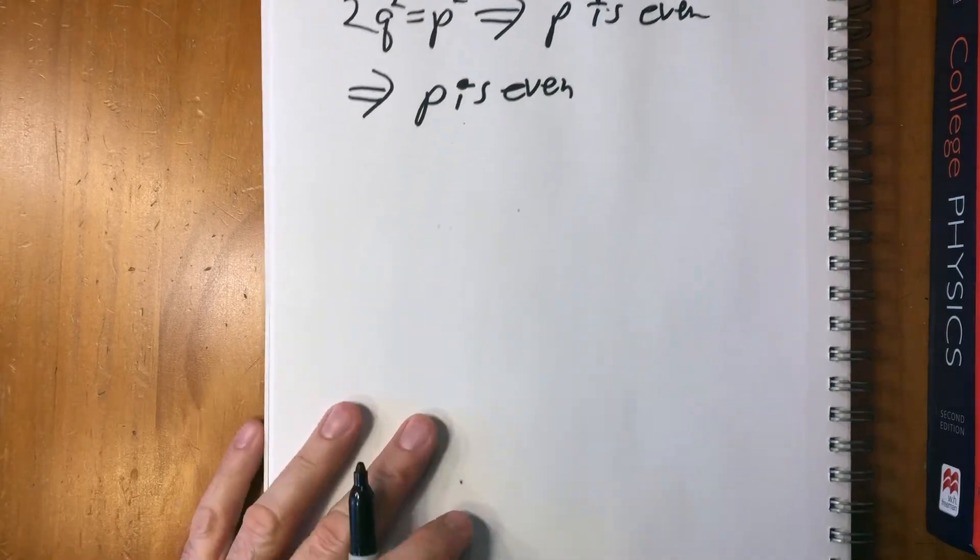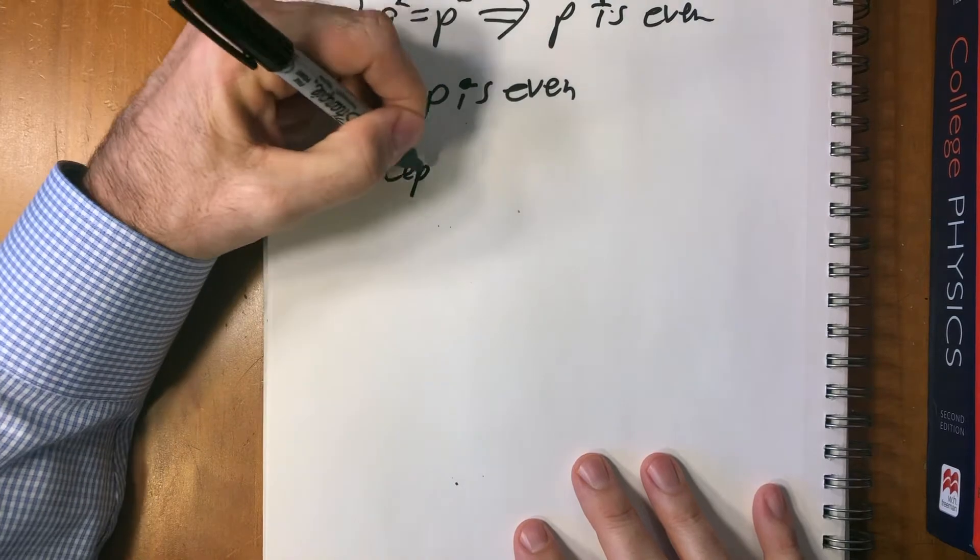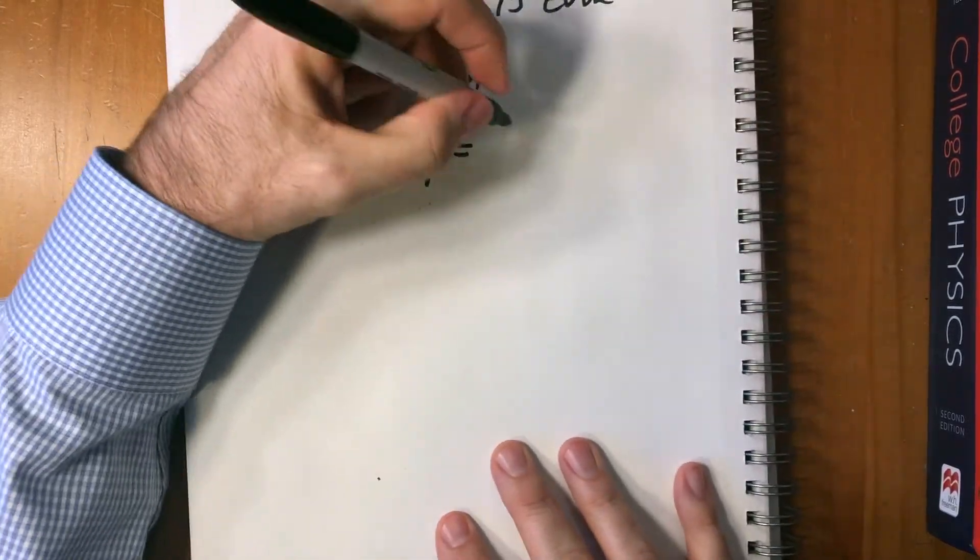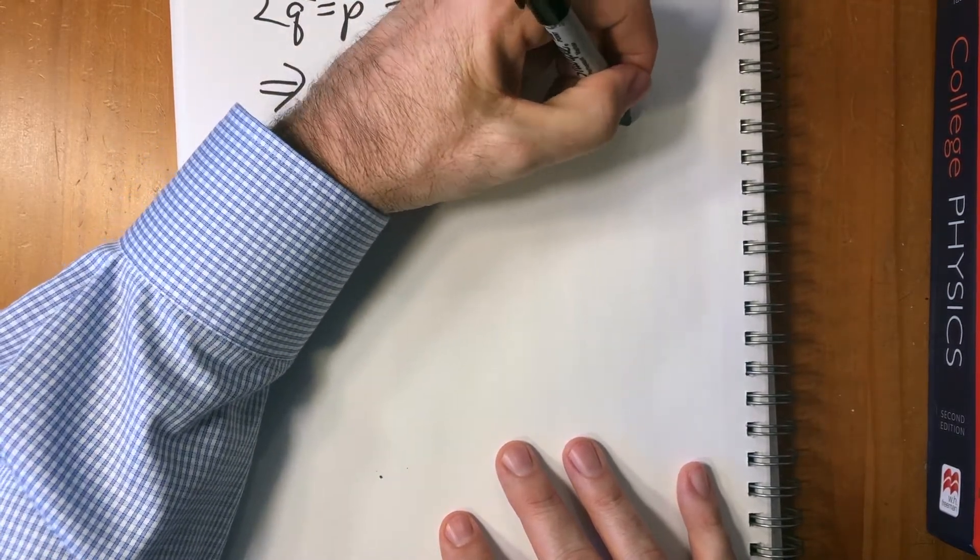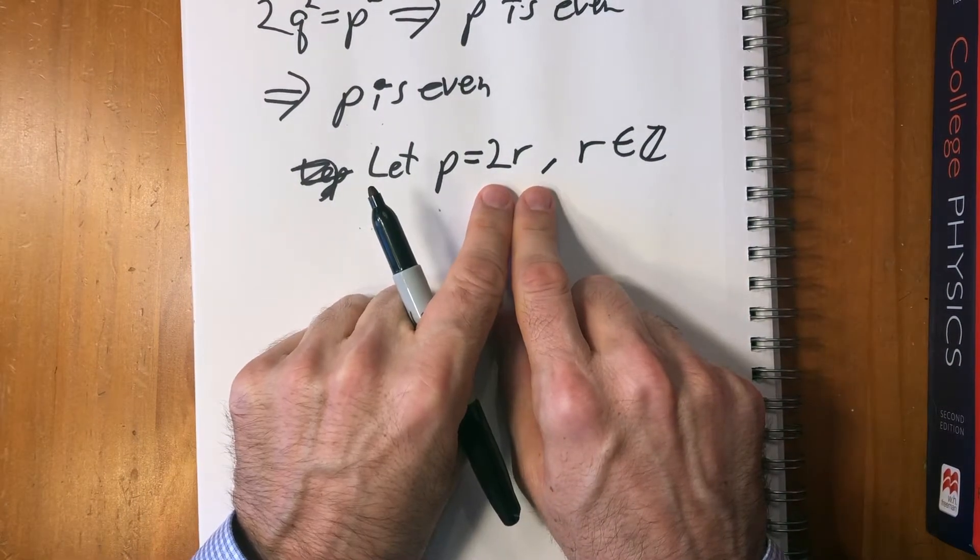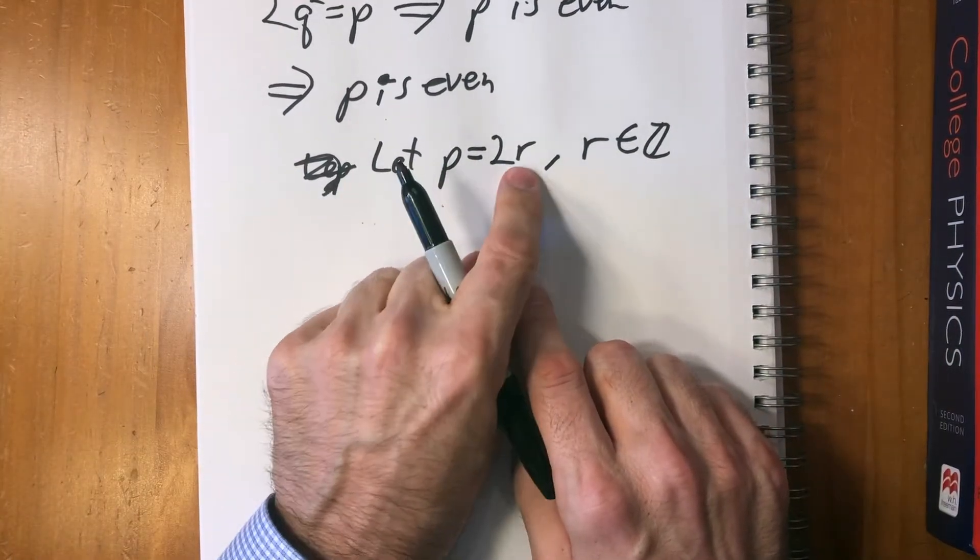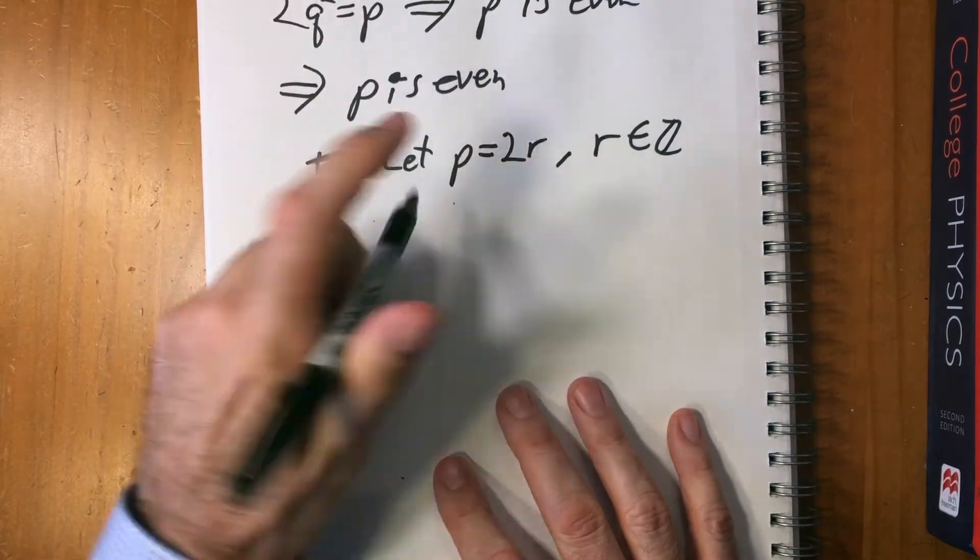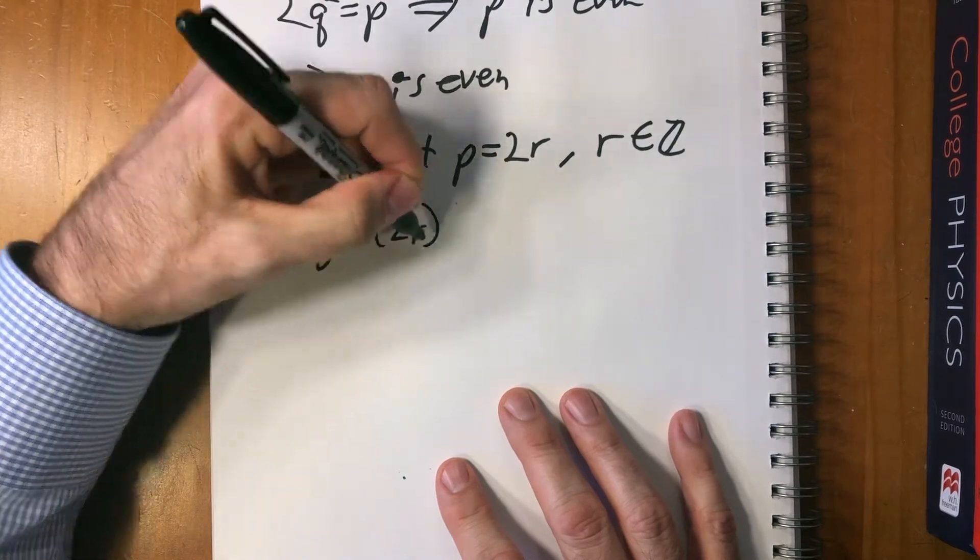Now if a number is even, that means it has a factor of two. So let's rewrite p. Let p equal 2r for some integer r. Let's rewrite this plugging in 2r, because p is even. So we have 2q² = (2r)².